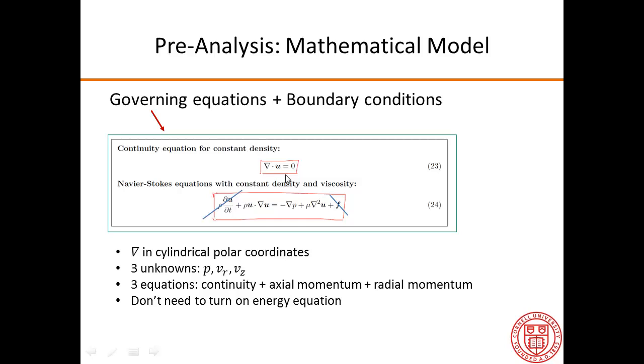These are written in cylindrical polar coordinates since we make the axisymmetric assumption here. We have three unknowns: pressure, radial velocity, and axial velocity. And we have three equations: continuity, axial momentum, and radial momentum. We don't need to turn on the energy equation.